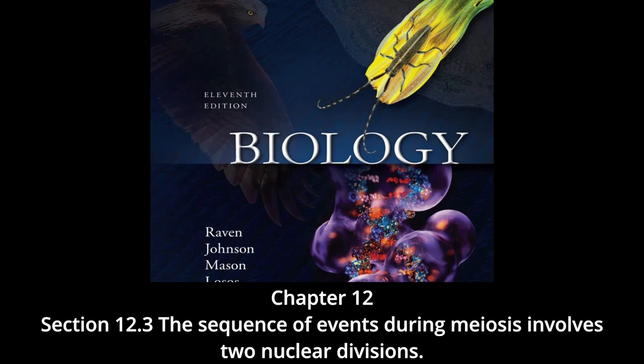At this point there are four chromatids for each type of chromosome — two homologous chromosomes, each consisting of two sister chromatids. The four chromatids do not separate completely, however, because they are held together in two ways: one, the two sister chromatids of each homolog are held near their common centromeres; and two, the paired homologs are held together at the points where crossing over occurred within the synaptonemal complex.